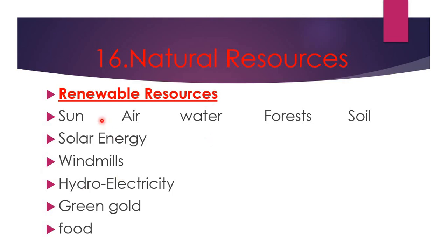As you can see here, sun, air, water, forest, and soil — these are all the renewable resources, meaning inexhaustible resources. Sun, air, water, forest, and soil have no end. Here is a table: sun produces solar energy, air gives us windmills, water gives hydro electricity, forest is called green gold, and soil gives us food.